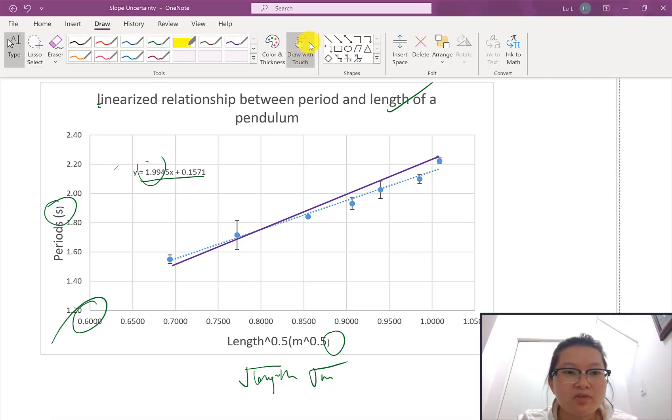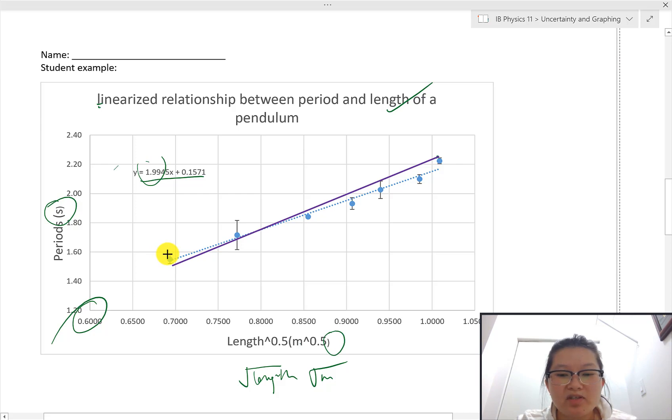So let's say we draw this max slope the way that I showed you before. Notice this line is unable to touch those error boxes with all of your data points. Same thing if I do the minimum slope. So going from the top and then touching the bottom over here.